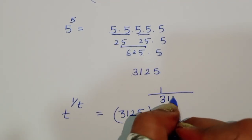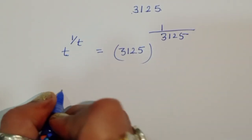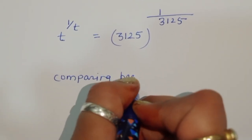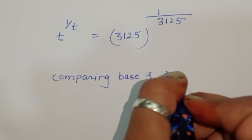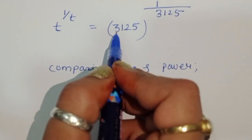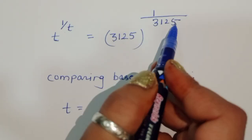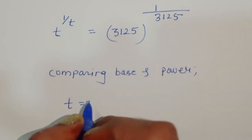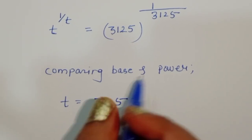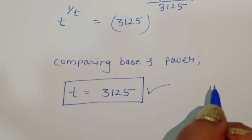Comparing base and power on both sides, we get t is equal to 3125. If we compare the powers, 1 upon t equals 1 upon 3125, confirming t equals 3125. This is the value of t in this equation. Let's verify.